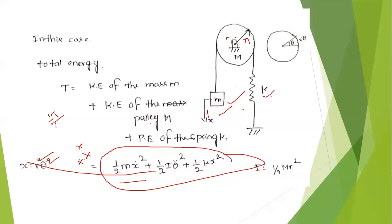Next, the kinetic energy of the translational and rotational motion. Then the potential energy — the potential energy is produced at the spring. Here the spring stiffness is K, giving ½·K·X². That is the actual equation. The total energy equals kinetic energy plus potential energy.